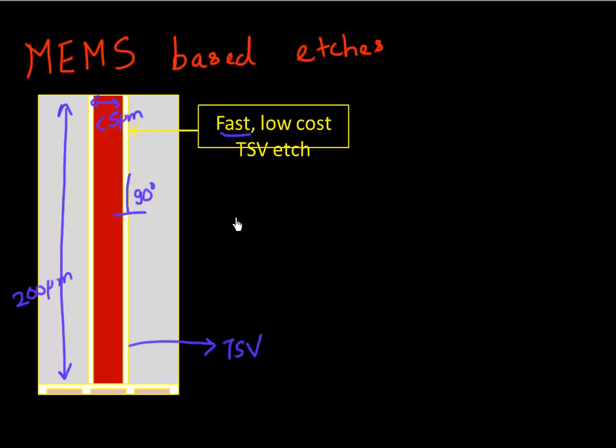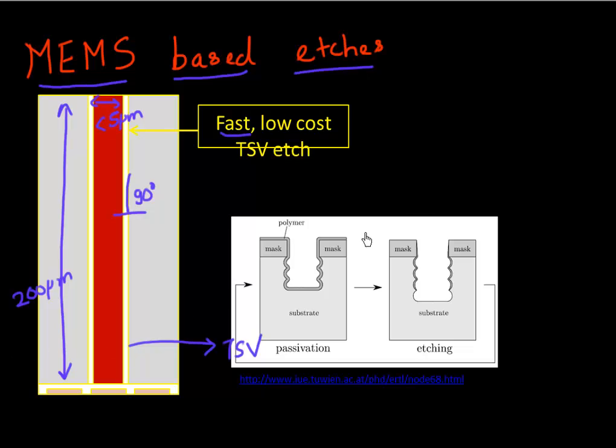The traditional semiconductor industry looked at where else has this been done before. It turns out MEMS industry or MEMS has been using these kinds of etches, or these high aspect ratio etches, for a while. How that is achieved, one way it's achieved is shown over here. It's called a Bosch process. Bosch is a very big MEMS company. This etch process is named after them.